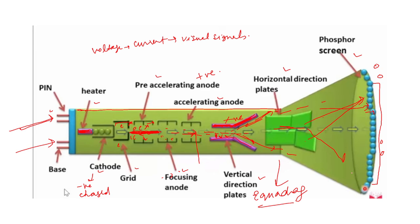The cathode is a nickel cylinder coated with oxide. The electron gun is heater plus cathode plus grid. In some books you will find that the electron gun also includes the pre-accelerating anode. The basic function of the electron gun is to emit electrons at very high speed in a specific direction. This is how CRT works. In the next videos I will explain flat bed monitors, LED, and LCD screens.